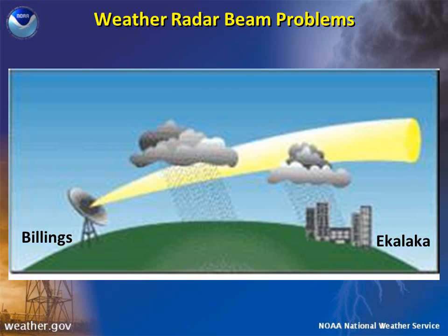Note that what the radar shows us is not necessarily what is reaching the ground. As the radar beam goes out from the radar, it continually rises in elevation. By the time this beam reaches a town such as Ikalaka, it is well over 10,000 feet above the ground. The radar cannot detect precipitation or winds below the beam, which is why we rely on your reports to give us some ground truth.